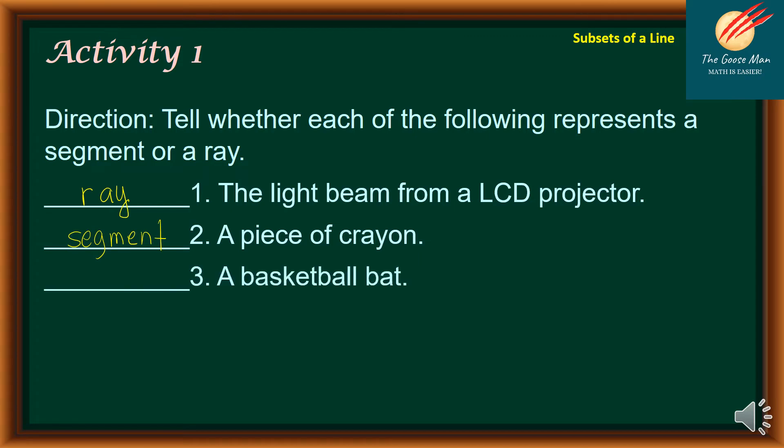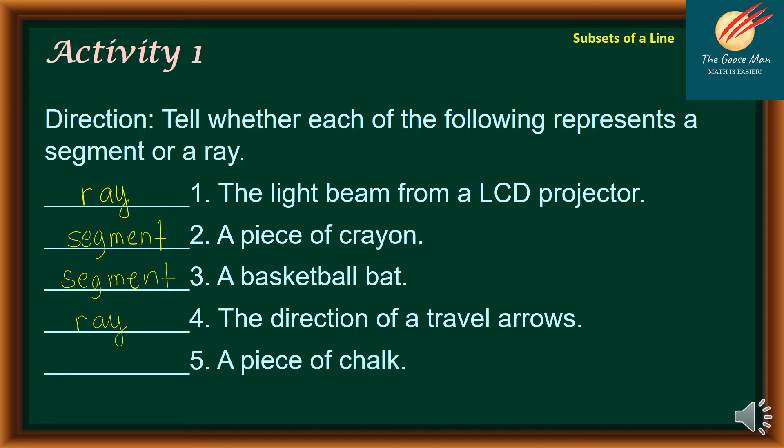Number three, a basketball bat. A basketball bat has definite size or length, so this is actually a segment. Let's move on to number four, the direction of travel arrows. This is a ray. And finally, a piece of chalk. A piece of chalk has definite size, so therefore this is a segment.